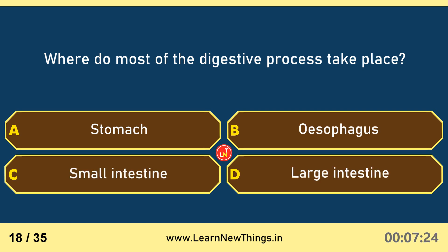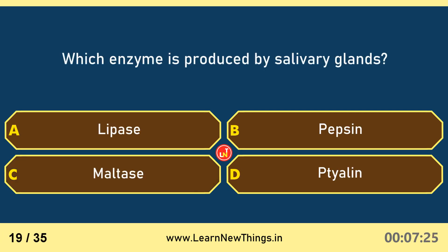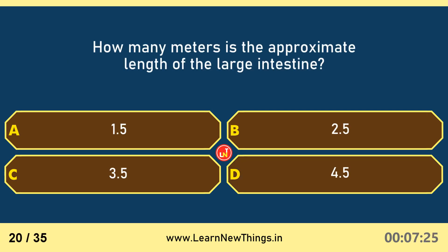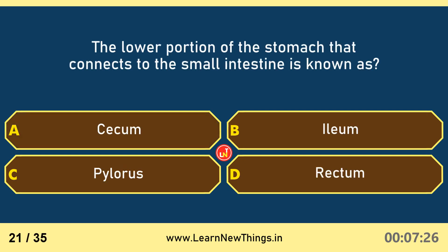Most of the digestive process takes place in the small intestine. The enzyme produced by salivary glands is ptyalin. The approximate length of the large intestine is 1.5 meters. The lower portion of the stomach that connects to the small intestine is known as the pylorus.